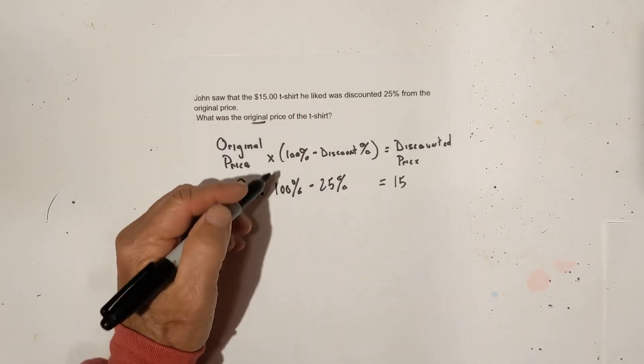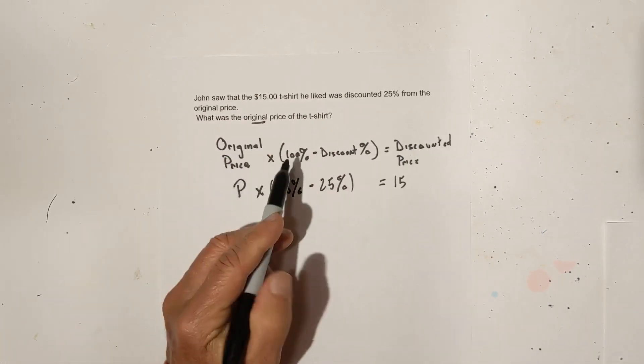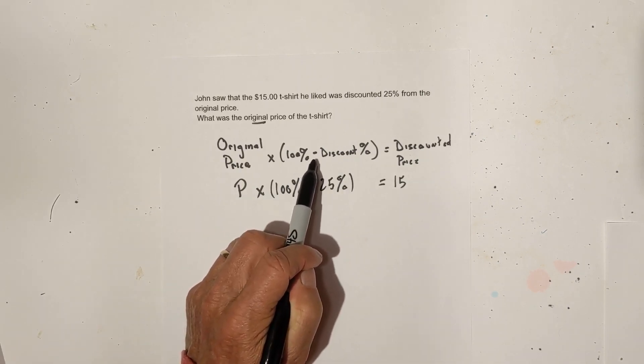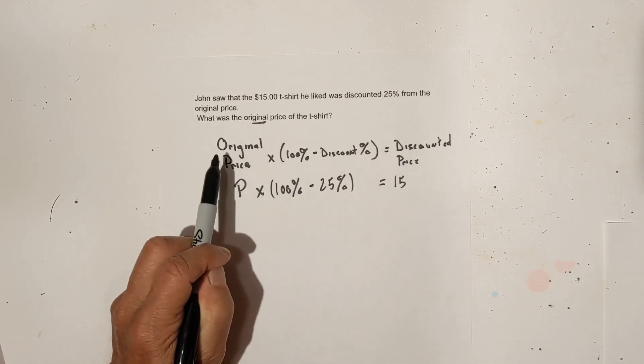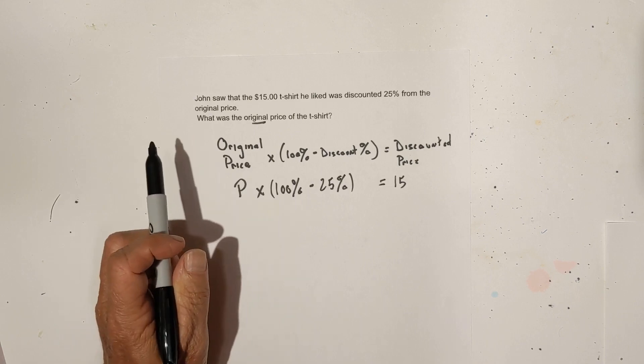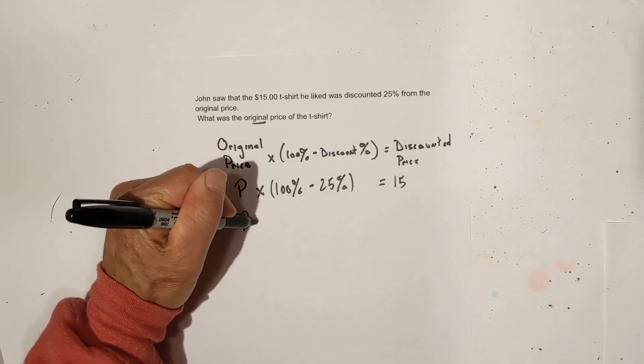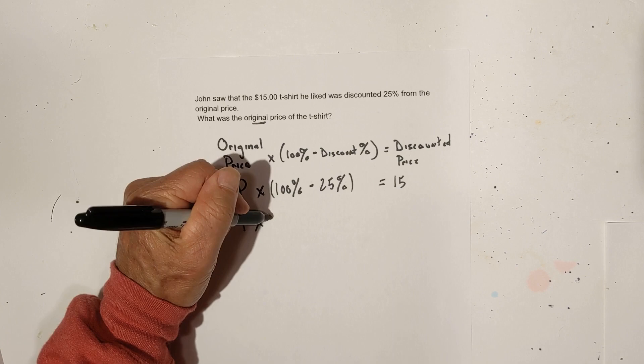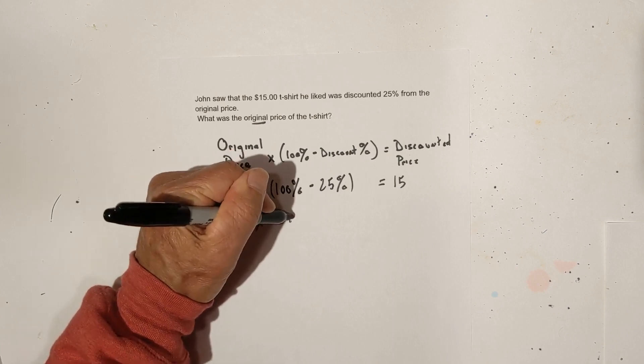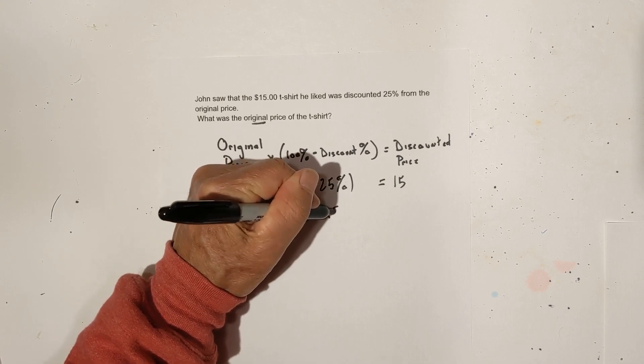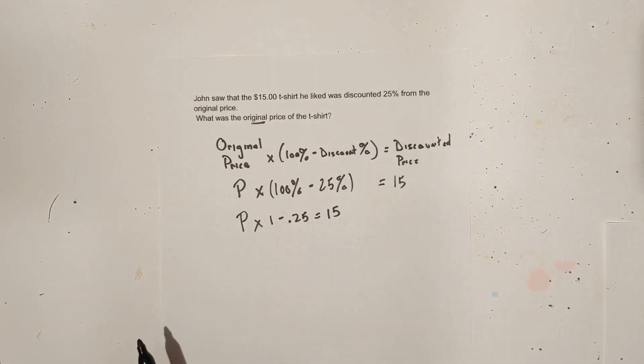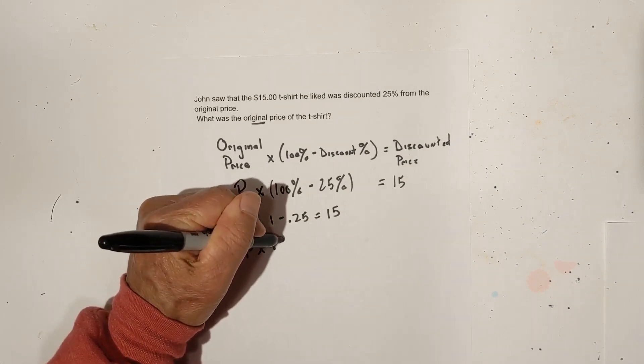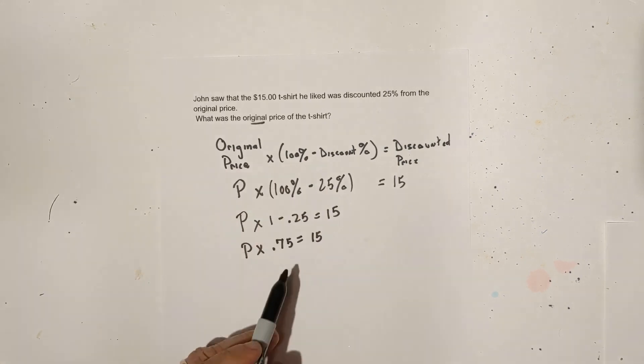And then we know we have 100% and the discount is 25%. Now, this 100% minus discount percent basically gives you what percent the discounted price is of the original price. So now let's begin to solve. We now have P times, let's convert this to a decimal by moving the decimal 2 places to the left. 1 minus 0.25 equals 15, and 15 is the discounted price.